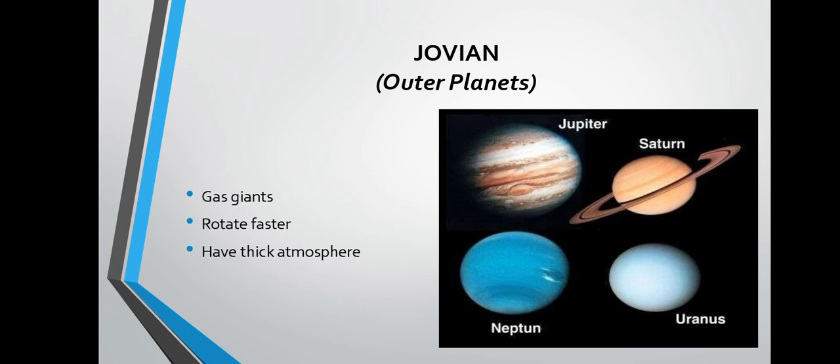The Jovian planets, or outer planets, are gas giants. They rotate faster relative to terrestrial planets and have thick atmospheres. In contrast, terrestrial planets have no atmosphere or very thin atmosphere. Jovian planets also have no solid surfaces.